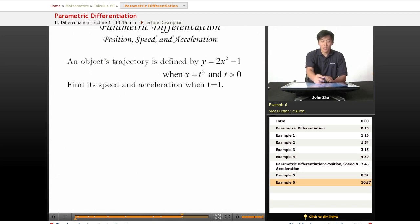OK, so we have one more example with the object's trajectory defined by y equals 2x squared minus 1 when x equals t squared.